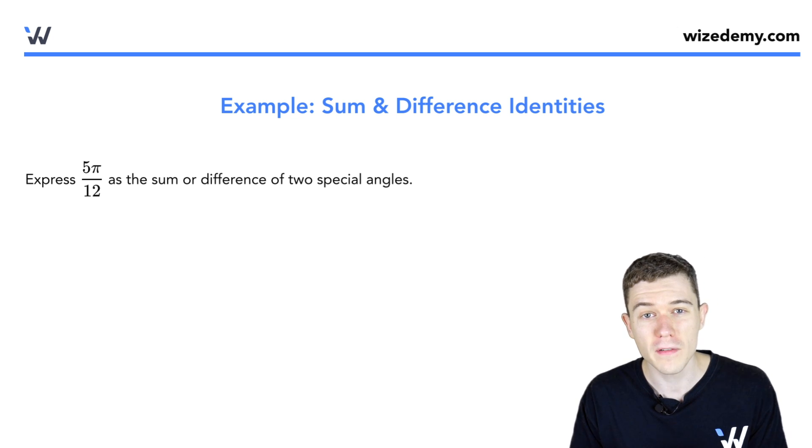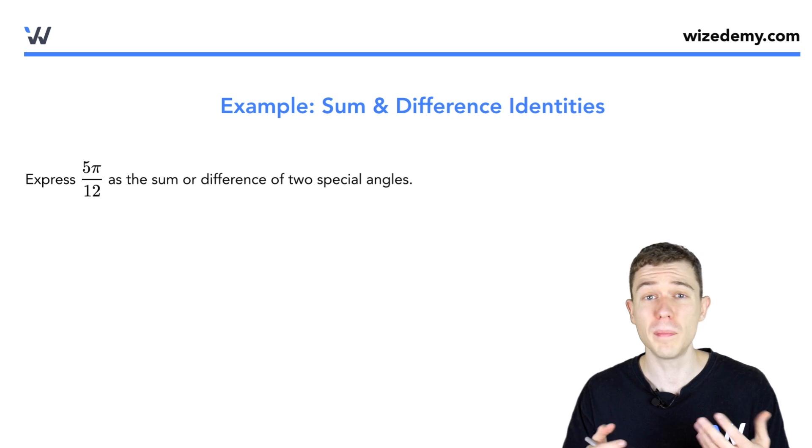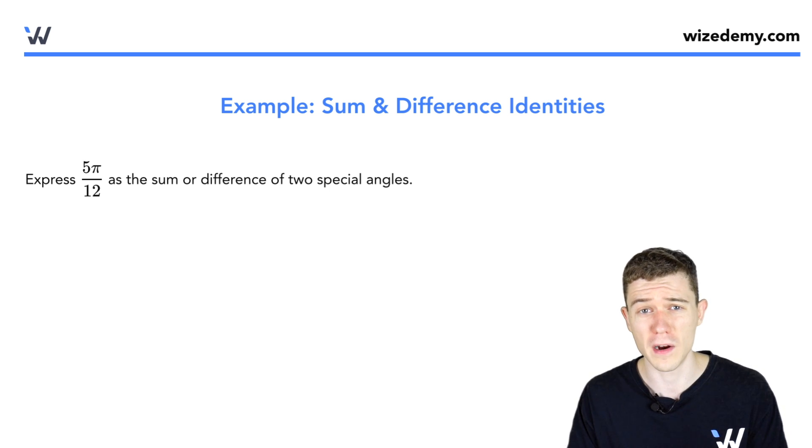We'd like to express 5π/12 as a sum or difference of two special angles. Think π/3, π/6, π/4, things that are on the unit circle.